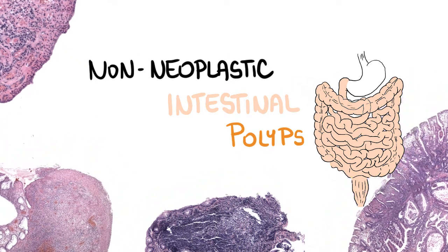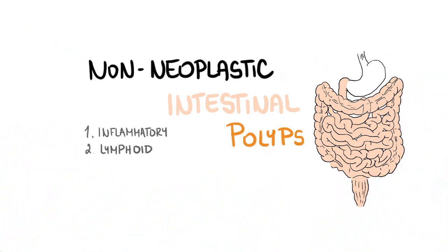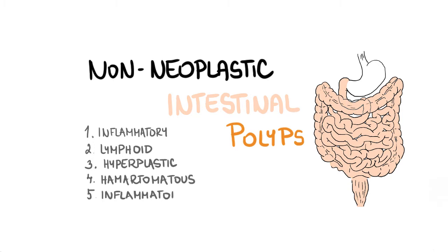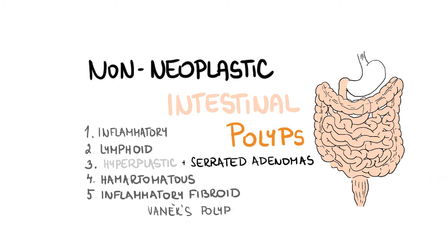The non-neoplastic group includes inflammatory, lymphoid, hamartomatous, and hyperplastic polyps, and also the so-called inflammatory fibroid polyp, or Vanek's polyp. Hyperplastic polyps are described together with serrated adenomas in the video referring to neoplastic intestinal polyps. Vanek's polyp is discussed in the video referring to gastric polyps.